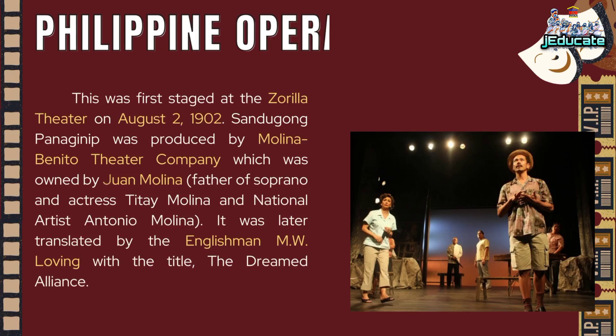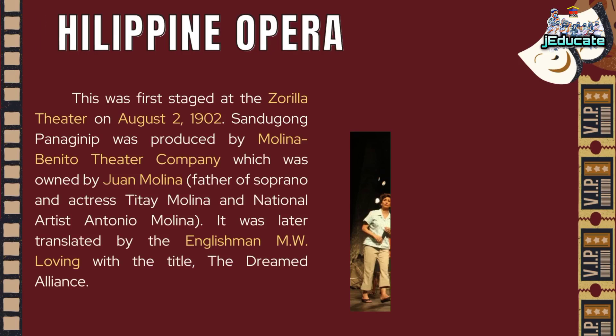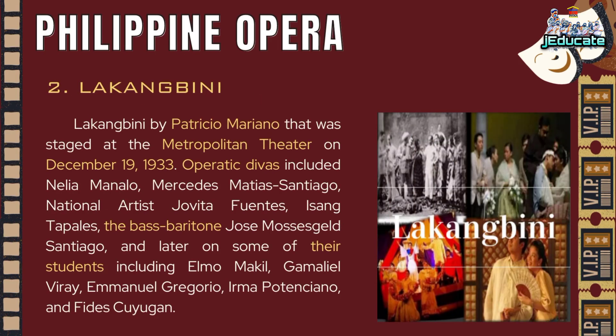Sandugong Panagimpan was produced by the Molina-Benito Theatre Company, owned by Juan Molina — father of soprano and actress Atang de la Rama — and national artist Antonio Molina. It was later translated by the Englishman M.W. Loving, with the title The Dreamed Alliance.